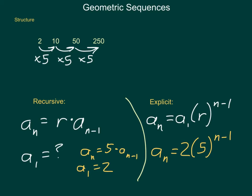You'll notice that n minus 1 stays in both formulas, and a sub n stays in both places. Whereas on our recursive formula, a sub n, a sub n minus 1, and a sub 1 are the same components, but we have to specify what our first term and common ratio are. So, how do we identify these sequences, begin writing their formulas, and what can we do with them? That's really what we're looking at in this lesson.